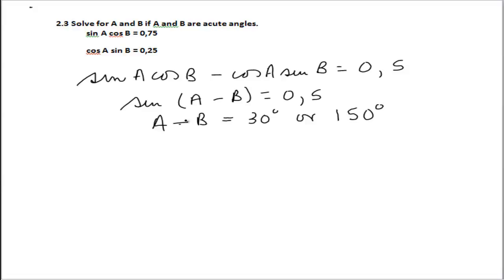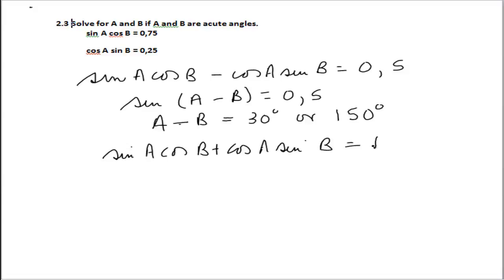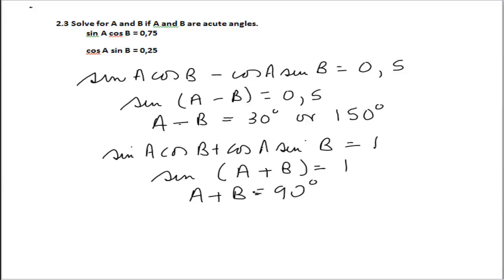Now adding the two expressions gives sinA cosB + cosA sinB = 1, which is sin(a + b) = 1, so a + b = 90°. Note that 180° - 90° still gives 90°. We now have two simultaneous equation pairs: a - b = 30° with a + b = 90°, and a - b = 150° with a + b = 90°.